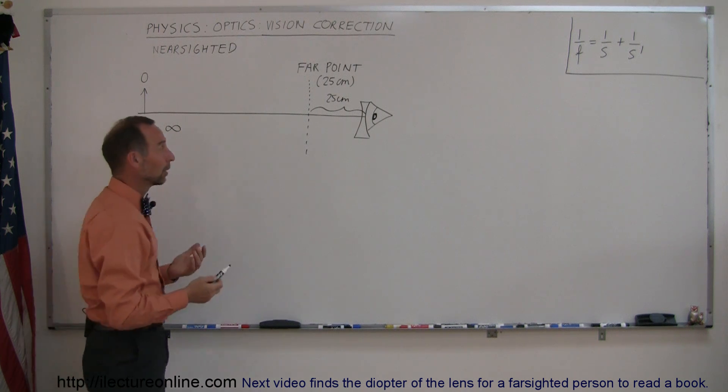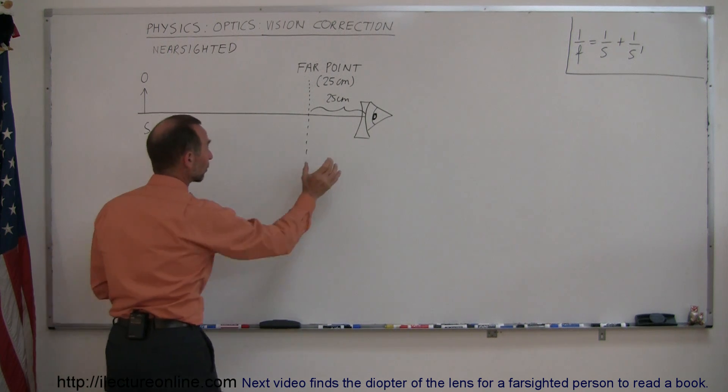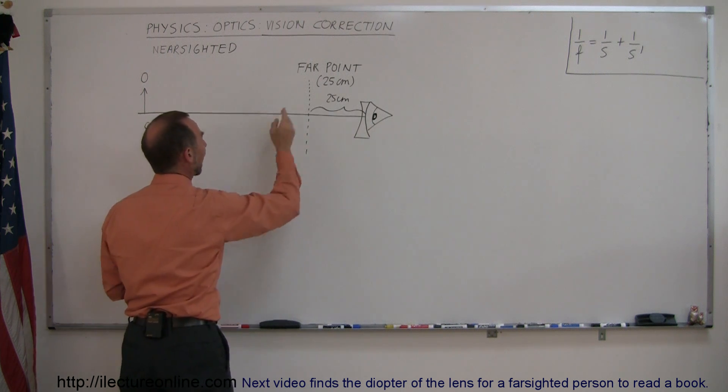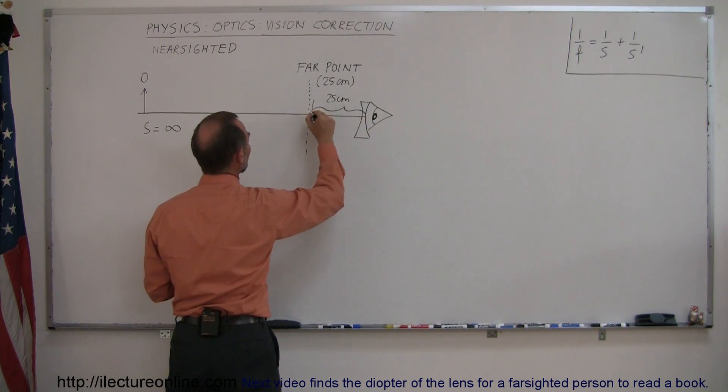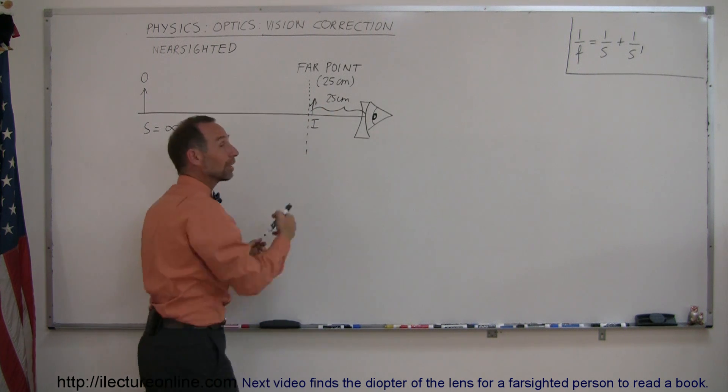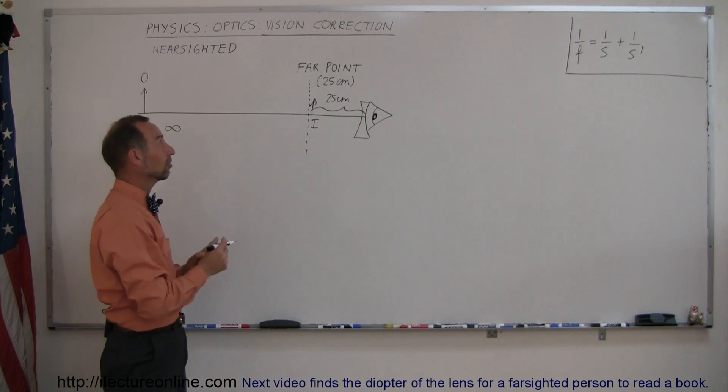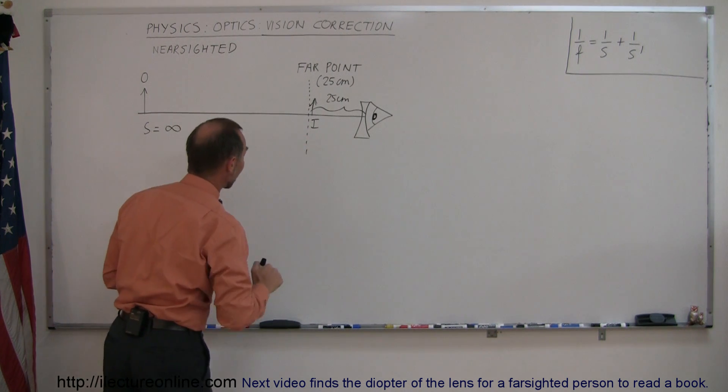So how do you correct for that? Well, we're going to give that person some diverging lenses, which causes an image to occur at the far point. So you want the image to be right there. There's your image. Of course, it'll be a virtual image because it's in front of the lens, which means the image distance is a negative distance, which has to be negative 25 centimeters.